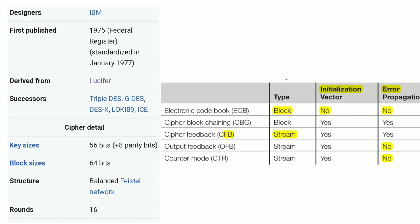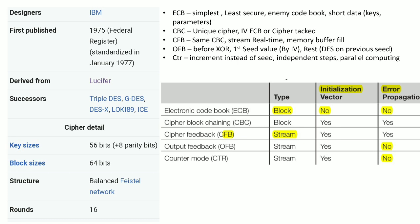Electronic Code Book is the simplest form of Data Encryption Standard. It is a block mode and does not use any initialization vector or chaining, so no error is propagated. However, it is the least secure mode — if the same plain text is encrypted multiple times, an enemy can generate a code book and use it for cryptanalysis to break DES. It is used to transmit short data such as keys and parameters for other modes.